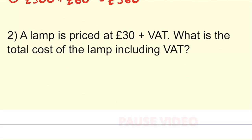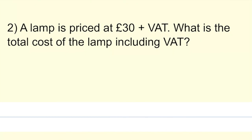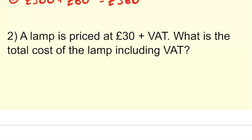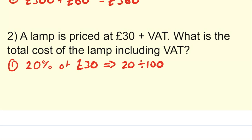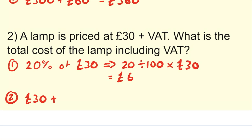Now I'm going to suggest that you pause the video and have a go at question number two by yourselves. We're going to find the VAT of £30, so 20% of £30. This is the same as 20 divided by 100, multiplied by £30, giving us an answer of £6. For part two, we find the total cost by taking the original cost of the lamp, £30, and adding on VAT of £6, which gives us an answer of £36.